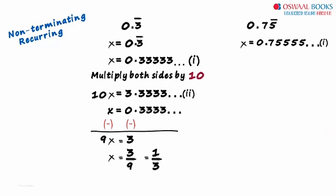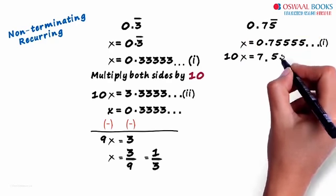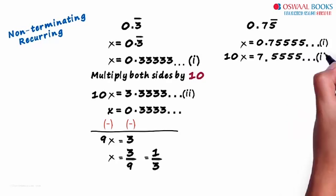To convert this into p by q form, we have to eliminate 5555 which is the recurring part. This one is interesting. Let us multiply both sides of the first equation by 10. That gives us 10x equals 7.5555 and so on. Let this be our second equation.